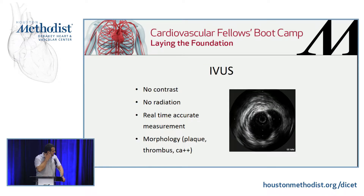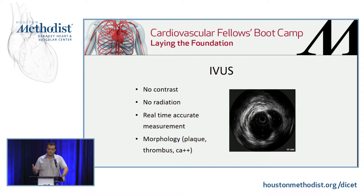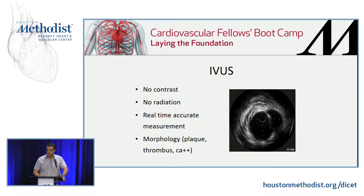IVUS has been used in some of these cases, and actually in some cases it could be better than a CAT scan. The nice thing about it is no radiation, no contrast. You can size the graft that you're going to use, and it also tells you more about what kind of injury you have — whether there's thrombus or calcium. So it's a good tool if you want to use it.